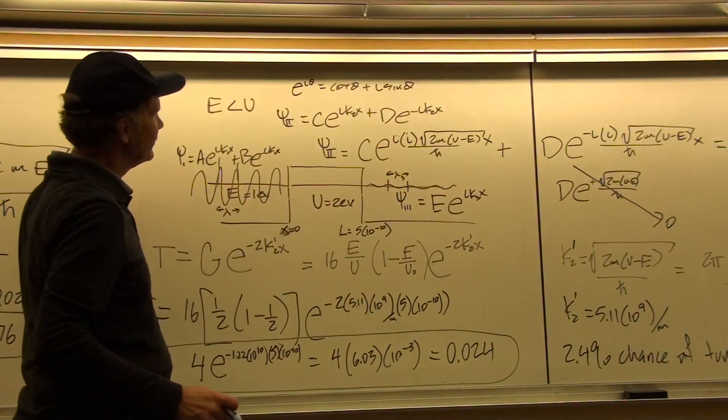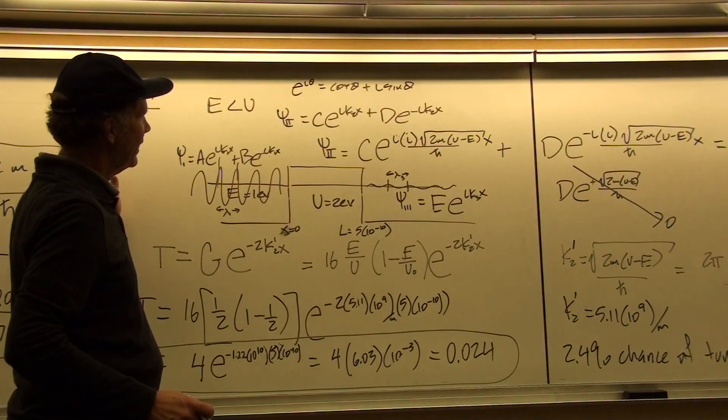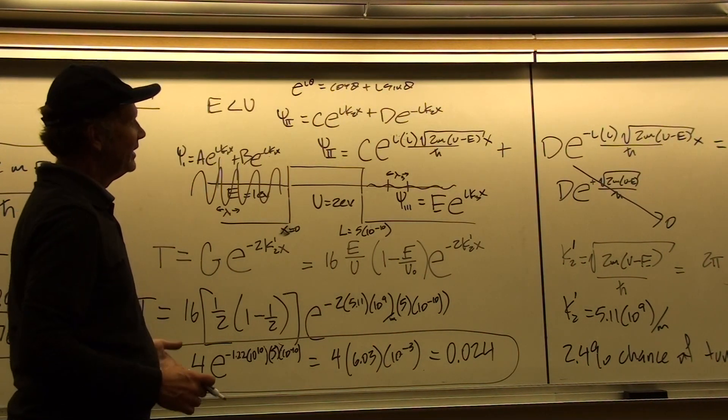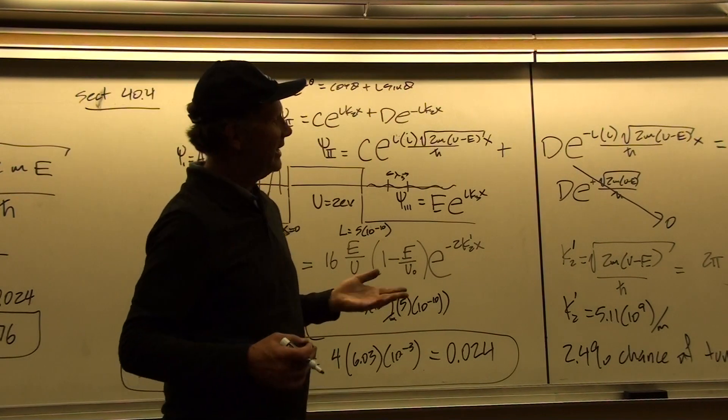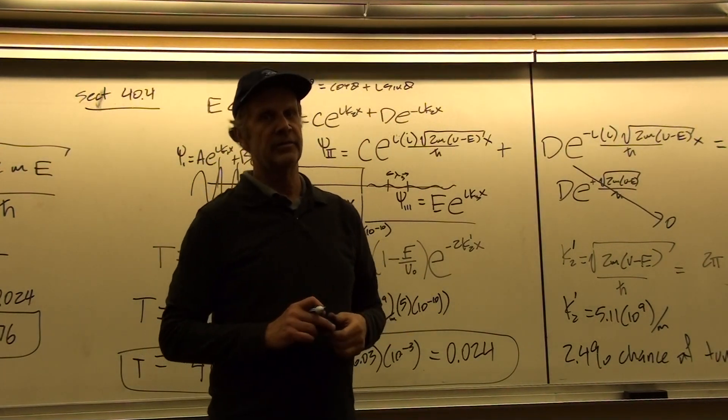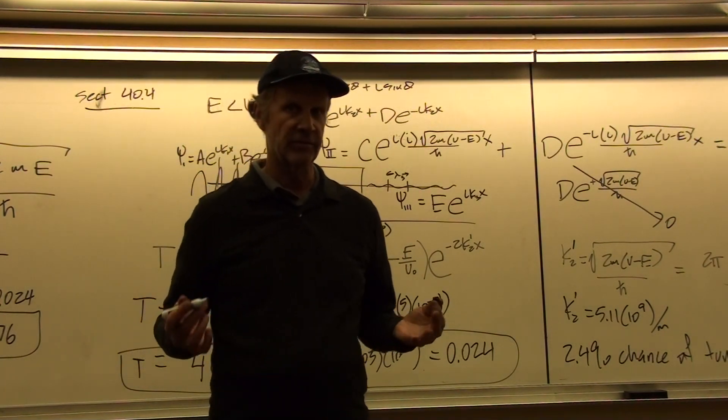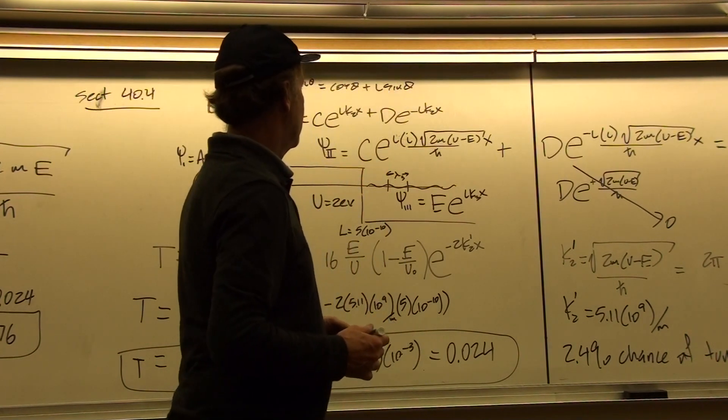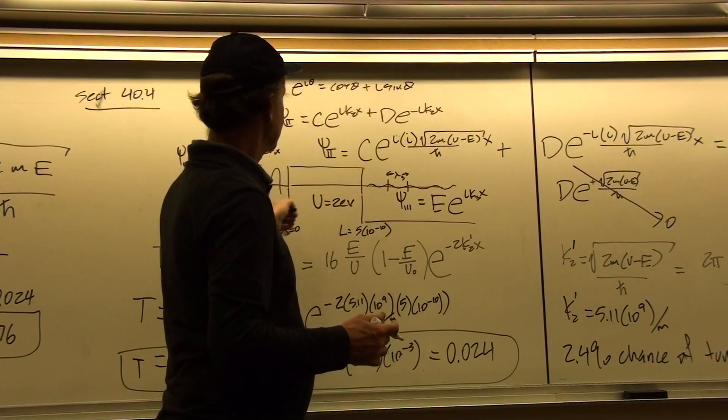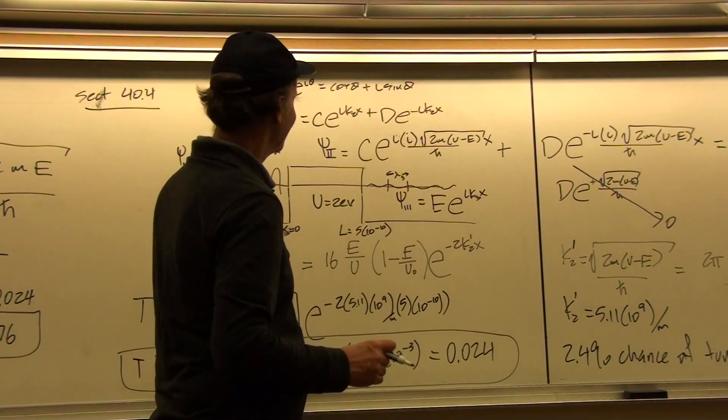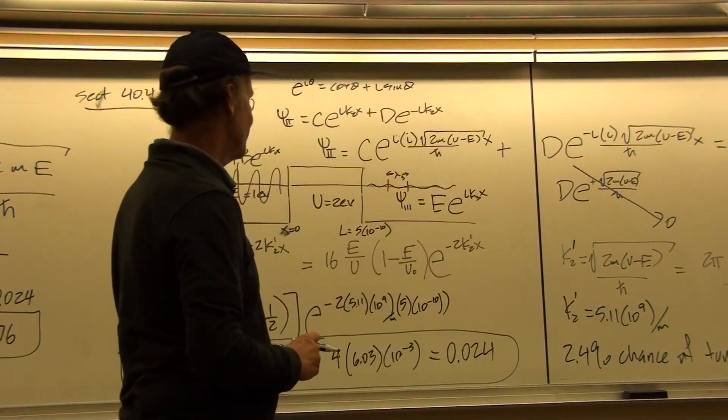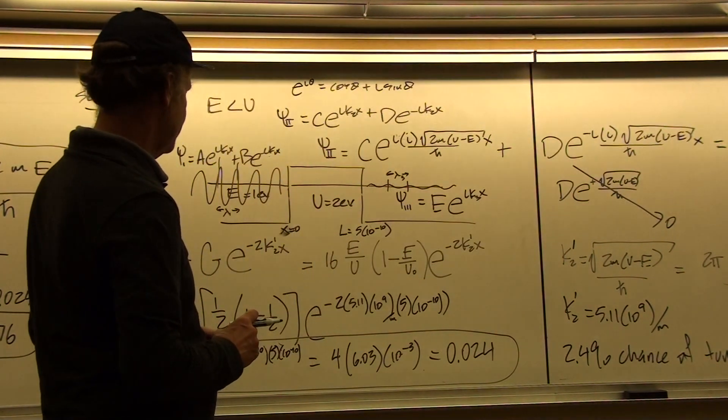So what we would say then, in a classical kind of electronic situation, is that this system has a lot of resistance, because not that much of the electron probability makes it through the barrier.